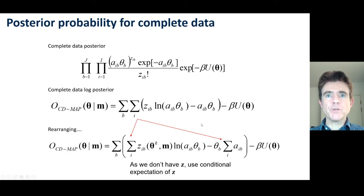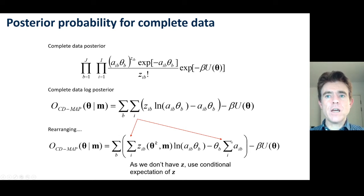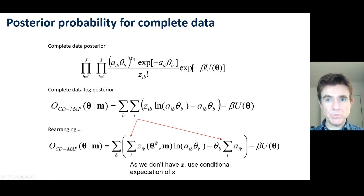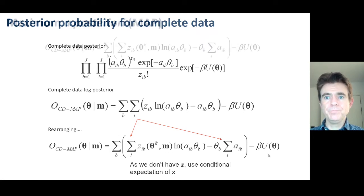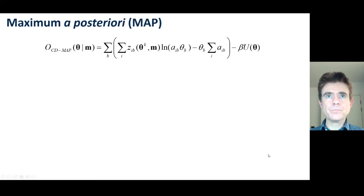We rearrange by placing the sigma_i within the brackets. I have now substituted explicitly for the conditional expectation of the complete data based on our current image estimate theta_k and on the measured data vector M.